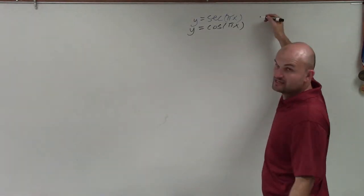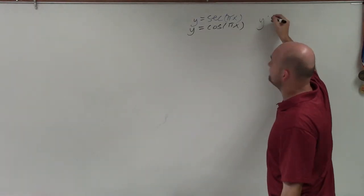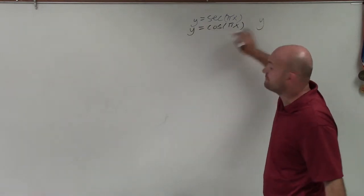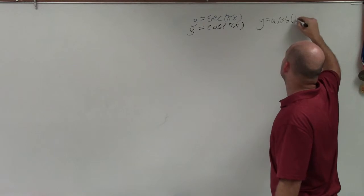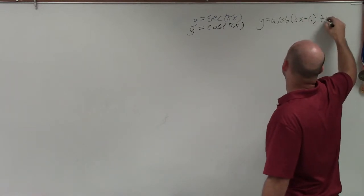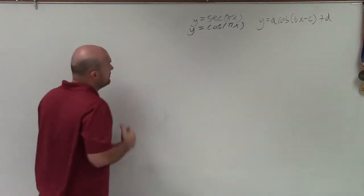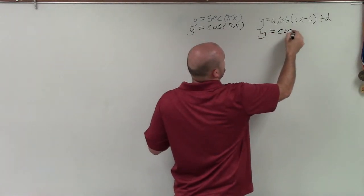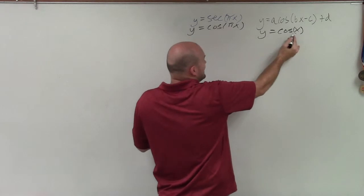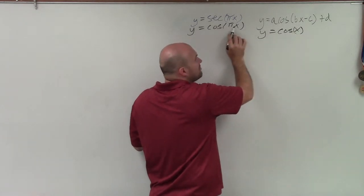To look at that, we need to look at our transformation form. This can be for any trigonometric function, but since we're graphing cosine, I'll use it for cosine: a times cosine of bx minus c plus d. What we notice from our graph, which is just y equals cosine of x, the only change that I have is I have pi multiplied by x.